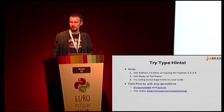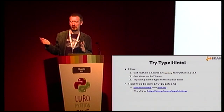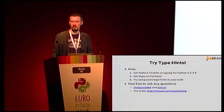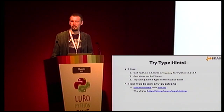Question: Is there any effort or project putting type hints on the entire standard library? Answer: The project is called TypeShed. TypeShed will eventually have stubs for the whole Python 3.5 and Python 2.7 standard libraries. Question: Is there any tool to generate stub files from docstring type information? Answer: I'm not aware of any such tool, but it would not be too hard to create one.